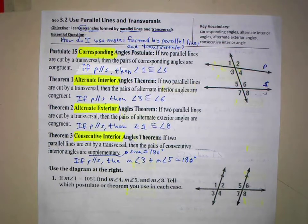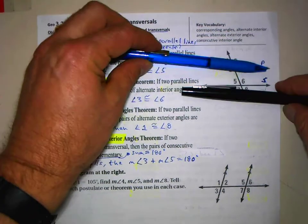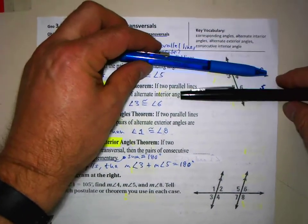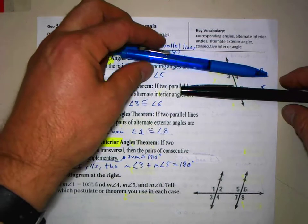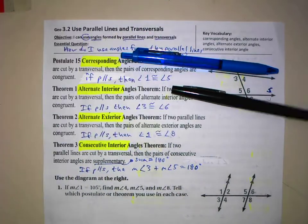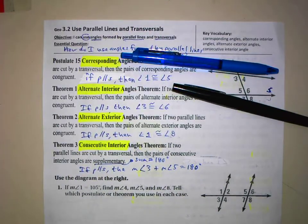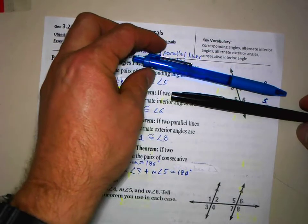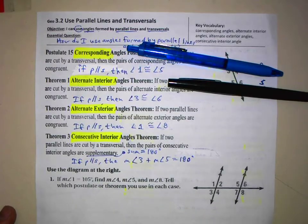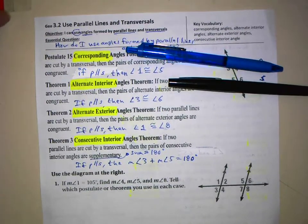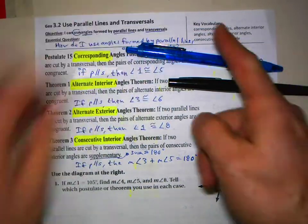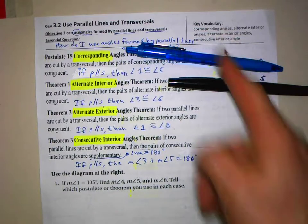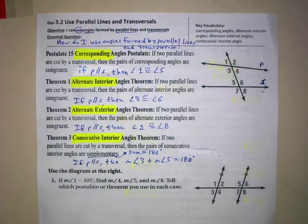We have our lines that are beside each other, but in this case we're saying that they're parallel. That's going to be real important and really helpful. If we know those lines are parallel, then all kinds of things open up for us and make it easier. Here are your parallel lines and your transversal across them.